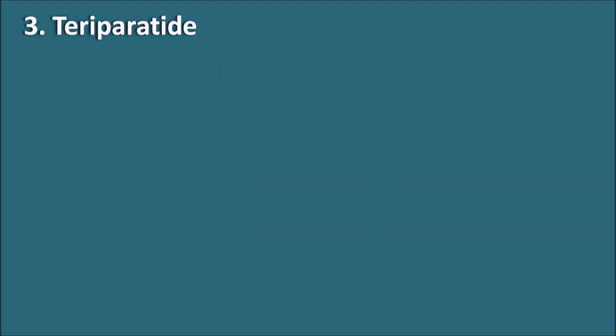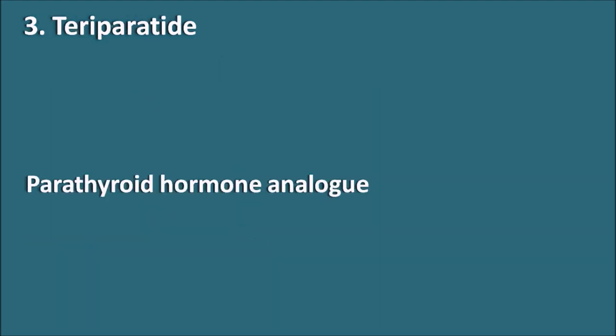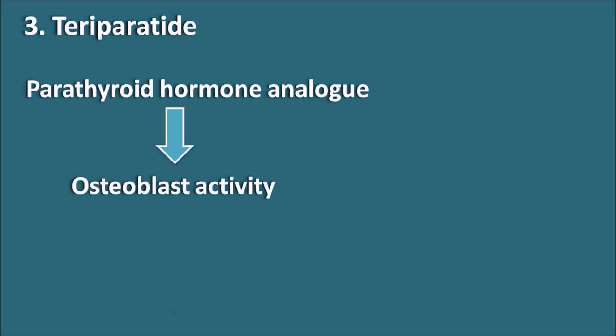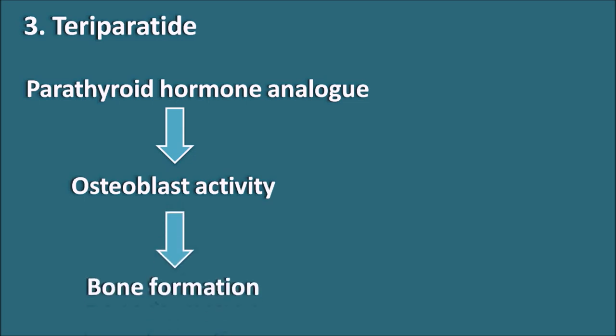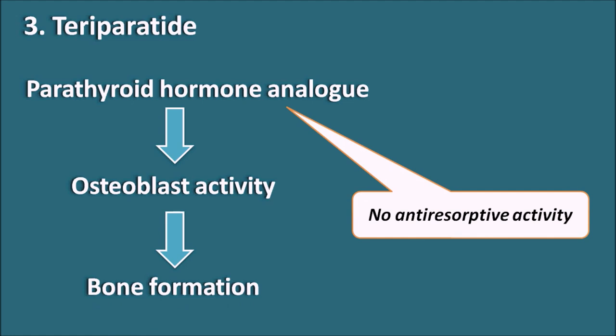The third type of drug is teriparatide, a parathyroid hormone analog — the 'PARA' in the name indicates parathyroid hormone. Teriparatide is responsible for stimulating osteoblast activity, thereby increasing bone formation. However, teriparatide has no anti-resorptive activity, so it mainly acts by promoting bone formation.